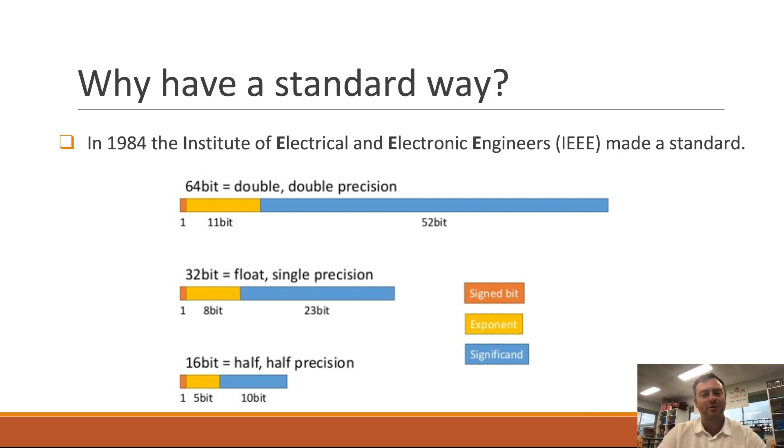So the sign bit, like I said, is the first bit, then the exponent is the next eight bits, and then the significant or the modulus at the end that tells you the precision that's in it. So they came up with three different ones.